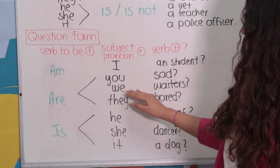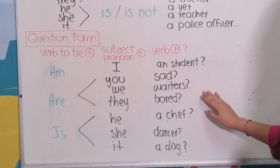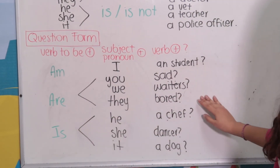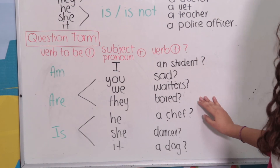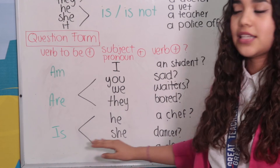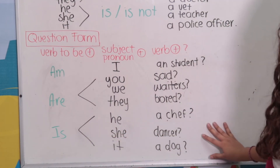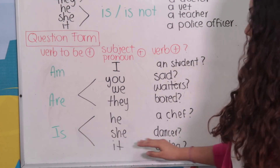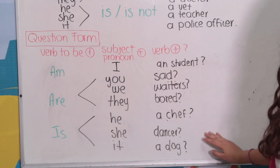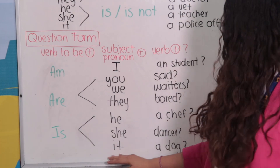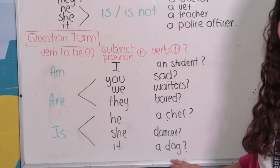Are we waiters? Are they bored? And then we have the third person: Is he a chef? Is she a dancer? Is it a dog?